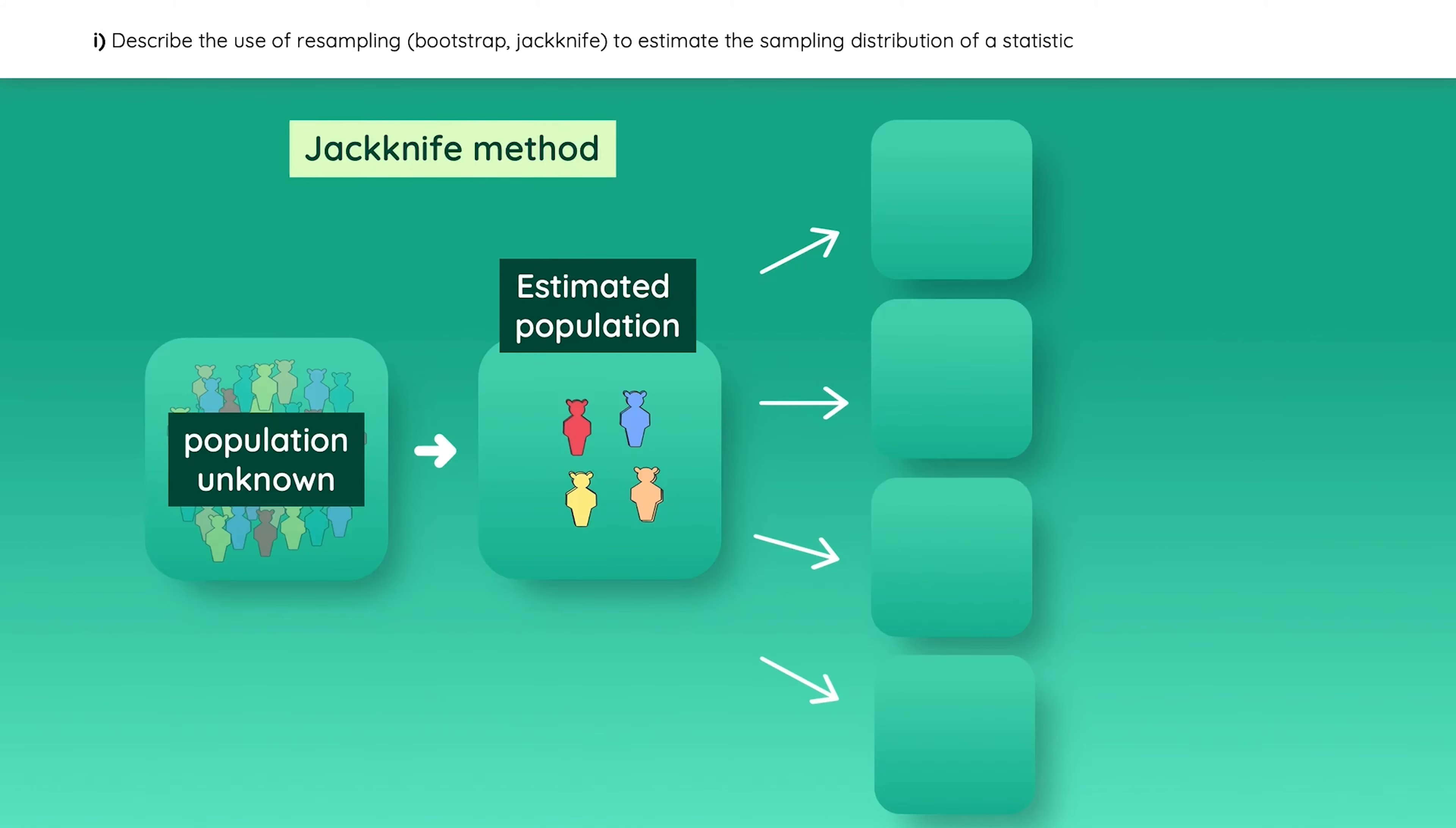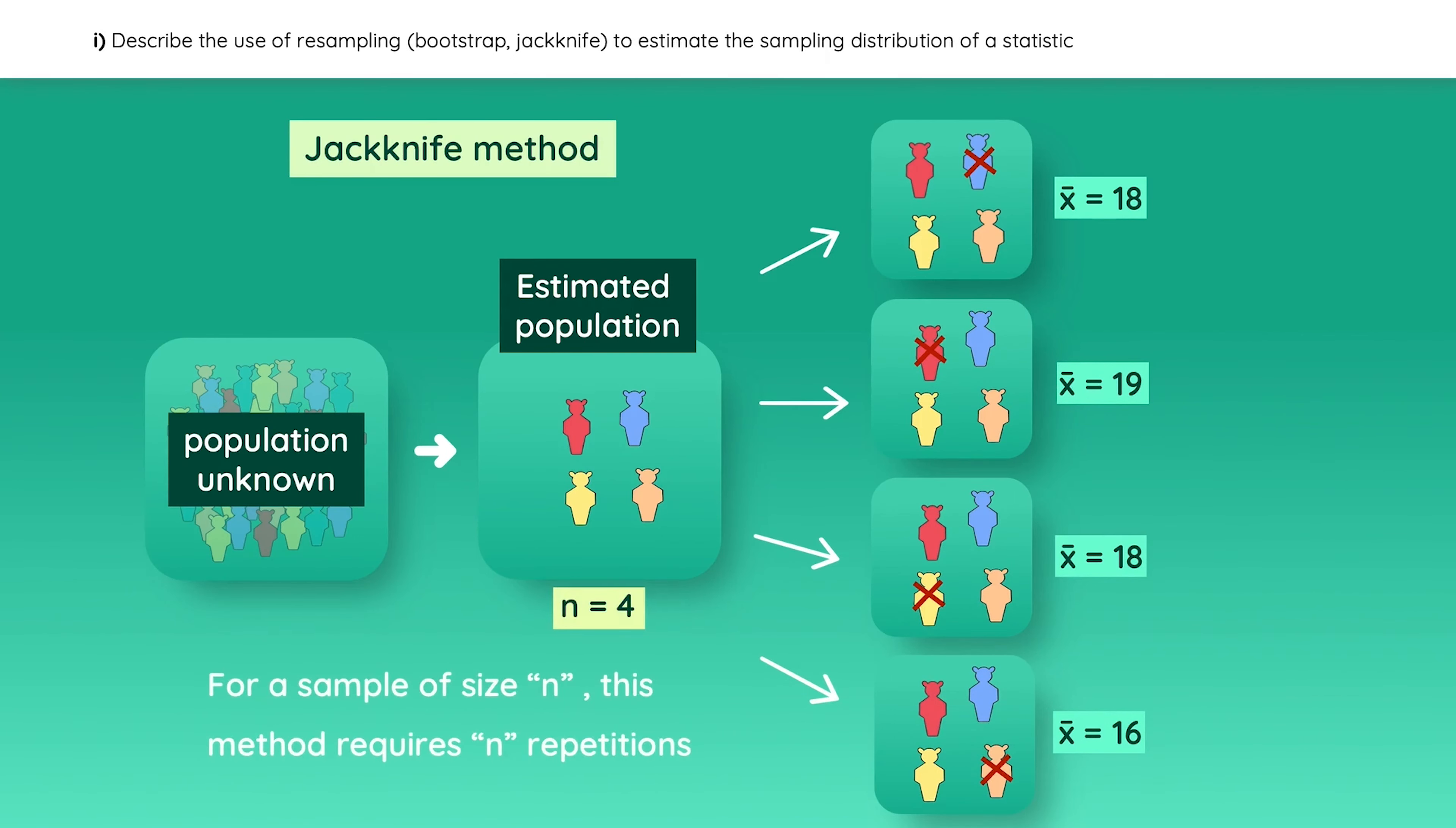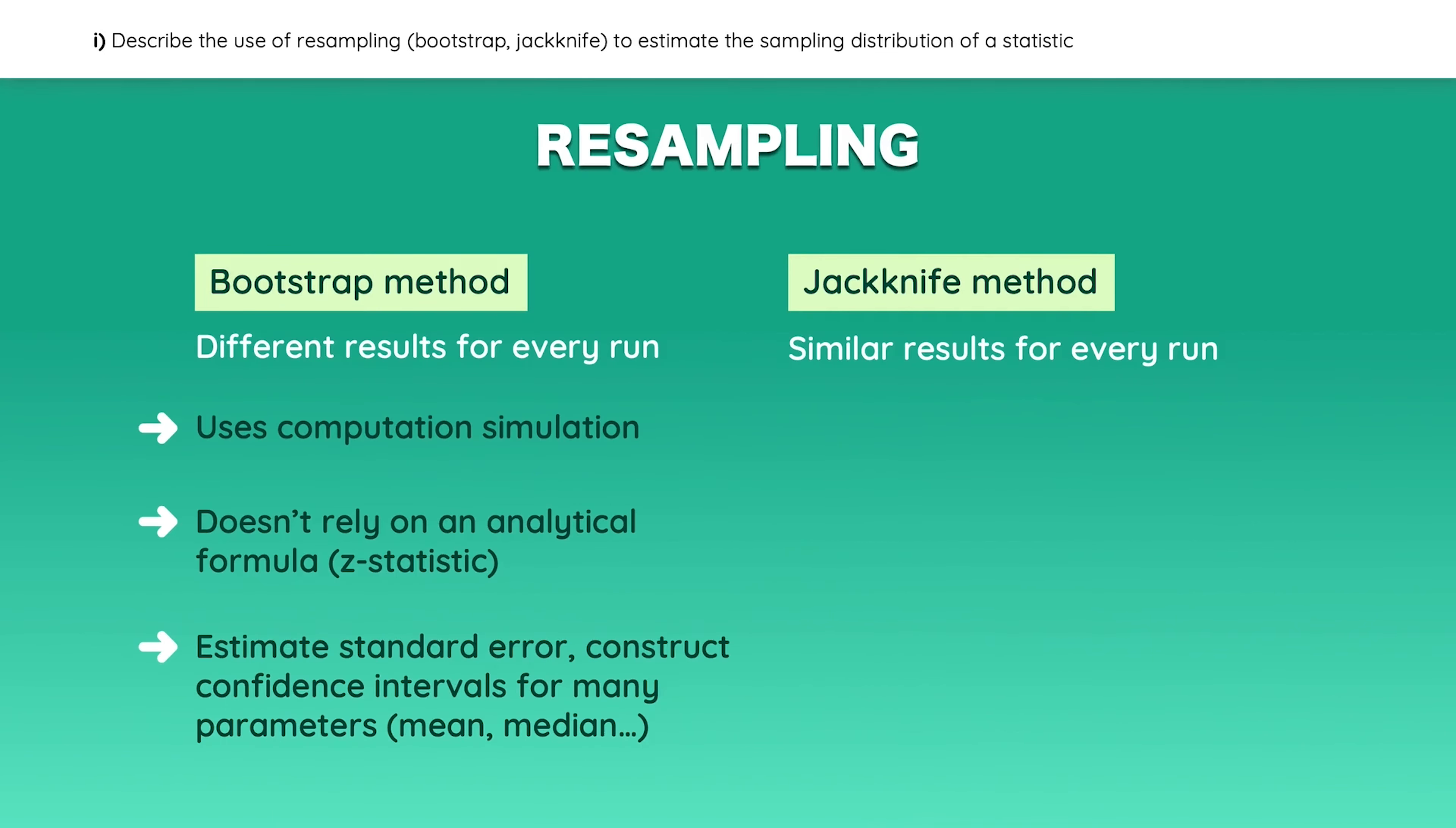Now let's review the jackknife method which takes the entire original sample, deletes one observation, and calculates the sample statistic using the remaining observations. Each time, a different observation is deleted and the sample statistic is calculated with the remaining items. So for a sample of size n, this method requires n repetitions. The jackknife method is usually used to reduce the bias of an estimator, find the standard error, or construct a confidence interval.